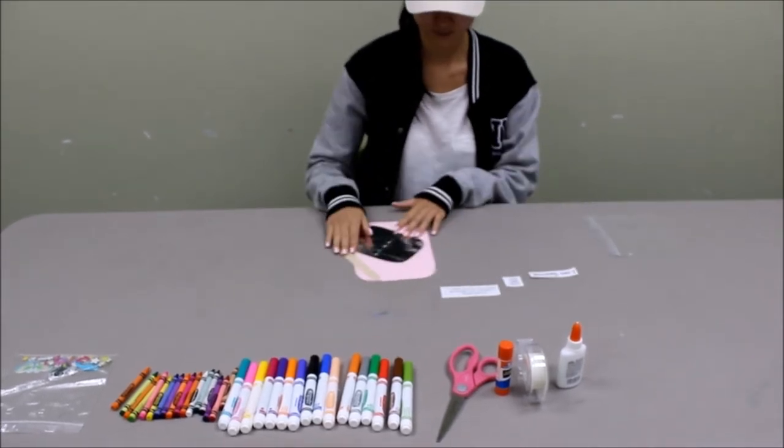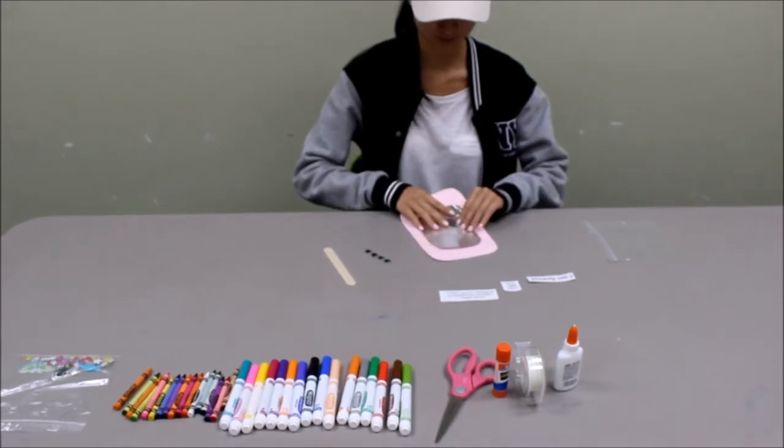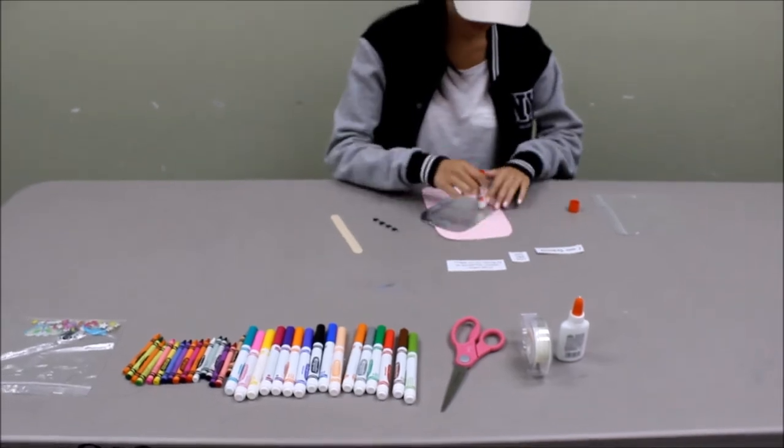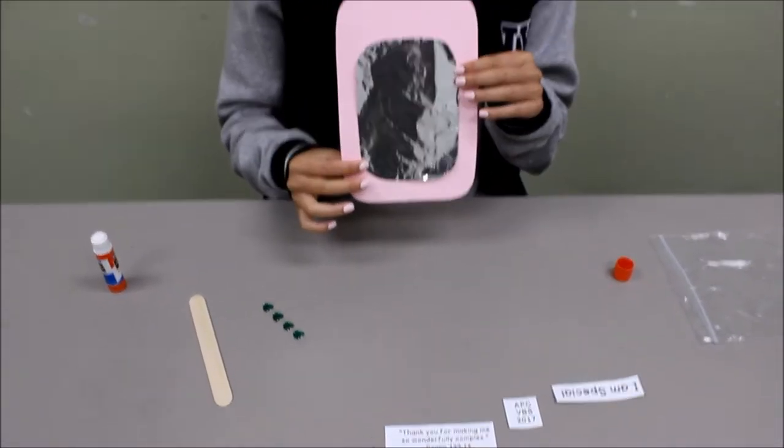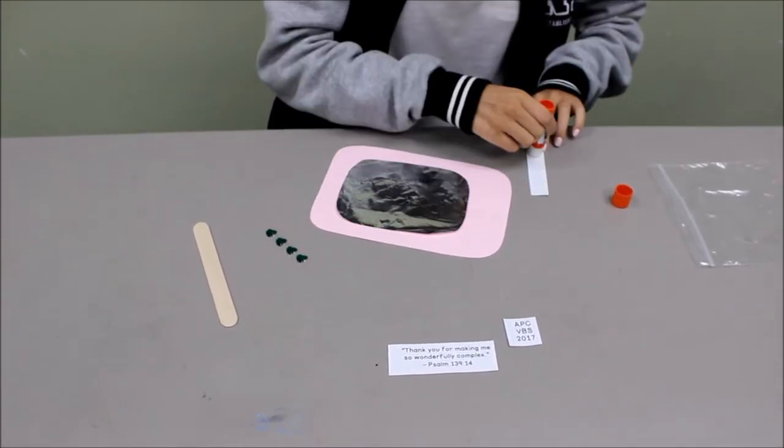First, students will glue the aluminum foil onto the color construction paper with a glue stick. Make sure they press down so the aluminum foil does not fall off.